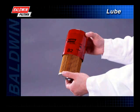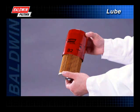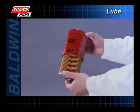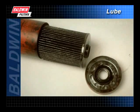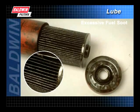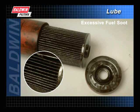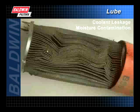Inspecting the inner element may detect additional problems found in the lube system. If the media is covered with a thick, loosely held sludge, it is an indication of an excessive amount of fuel soot. This could be the result of a wide range of factors, many of which can be readily eliminated by a mechanic who knows the vehicle.